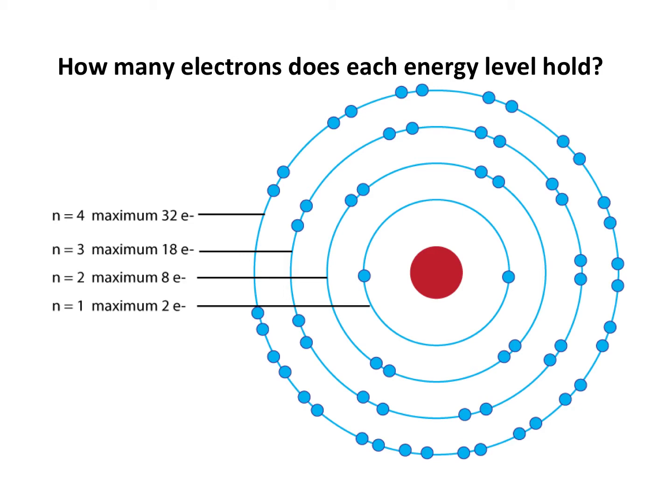The third principal energy level can hold 18 electrons maximum, and the fourth can hold 32, and it keeps going 32 after that.